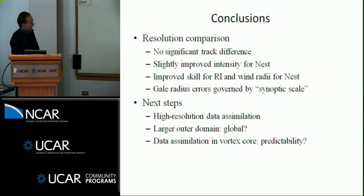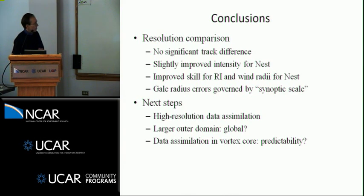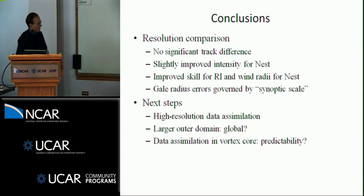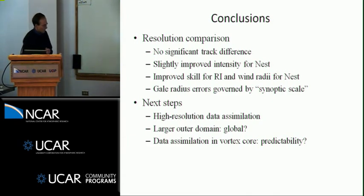Some conclusions: for the resolution comparison, not surprisingly, there was no significant track difference between high and coarse resolution. There's slightly improved intensity for the nested runs — about 8% overall — not dramatic but it was there. There's improved skill for rapid intensification and wind radii for the nests. Gale radius errors are governed by the synoptic scale. For next steps: high-resolution data assimilation is critical, since we haven't touched the inner core with data assimilation. The outer domain choice is also important — we had problems with Hurricane Fred this past year, where our domain just wasn't big enough.